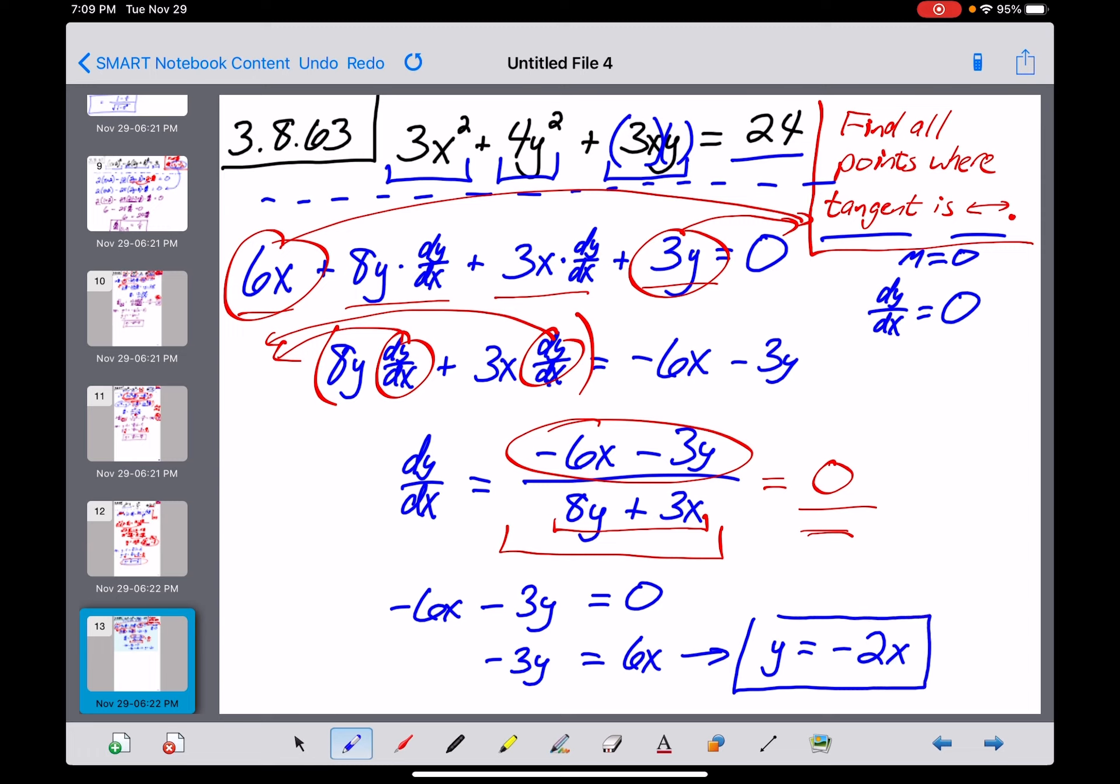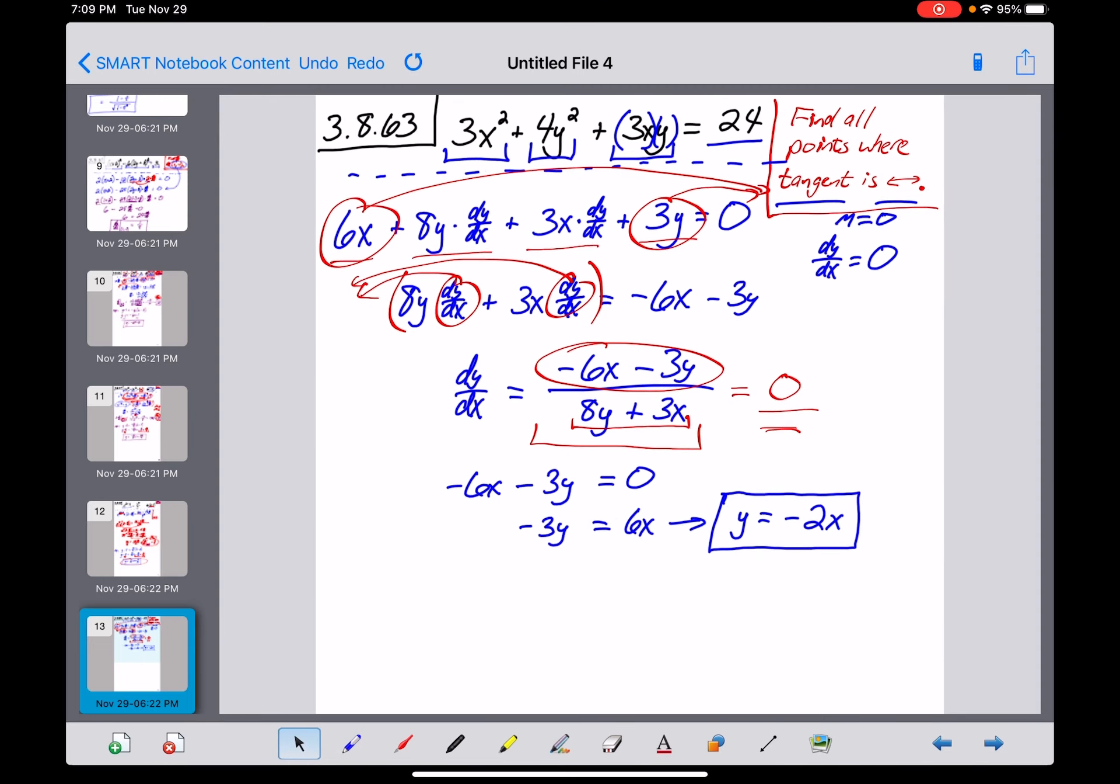Like I said, this doesn't give us a numerical value, but it tells us that this answer can occur. We can have a horizontal tangent line any time your y-coordinate is equal to negative 2 times your x-coordinate. Now what does that do for us?